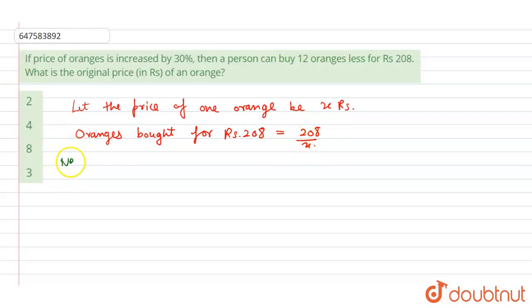So now, new price is equal to X plus 30% of X. The increase was 30%. X plus 30%, that means 0.3X, equals 1.3X.